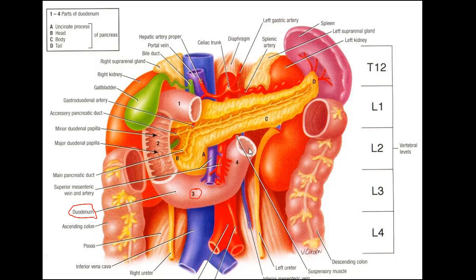I want to highlight the relation of the superior mesenteric vessels to the duodenum. This is the superior mesenteric artery and this is the superior mesenteric vein. You can see how they arch over the third part of the duodenum. This relation is important because we have a syndrome called superior mesenteric artery syndrome.